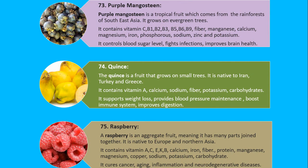Number 73. Purple mangosteen. Purple mangosteen is a tropical fruit which comes from the rainforests of Southeast Asia. It grows on evergreen trees. It contains vitamin C, B1, B2, B3, B5, B6, B9, fiber, manganese, calcium, magnesium, iron, phosphorus, sodium, zinc and potassium. It controls blood sugar level, fights infections, and improves brain health.